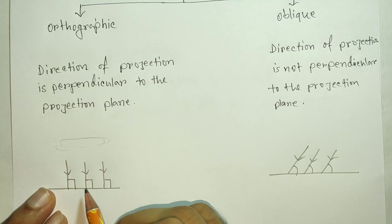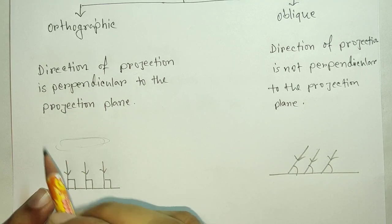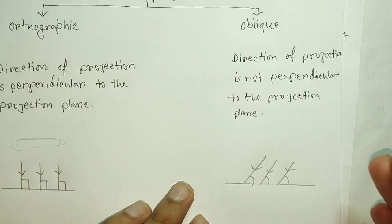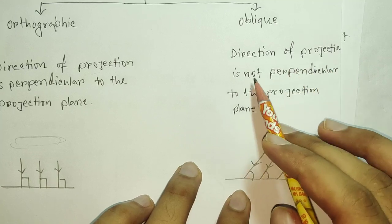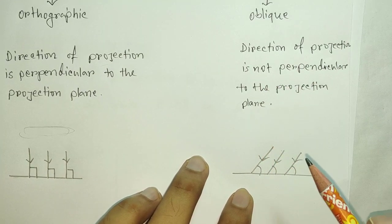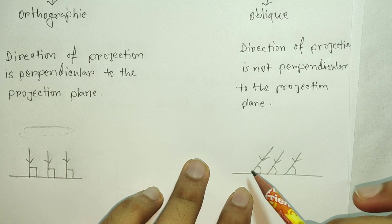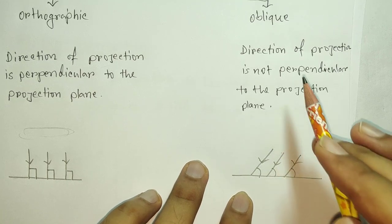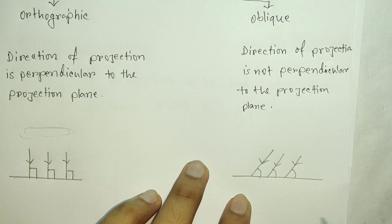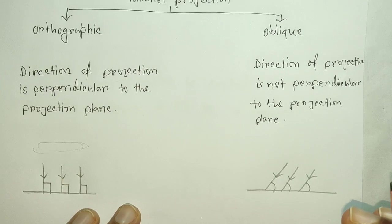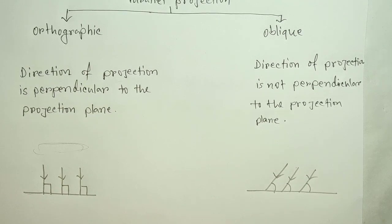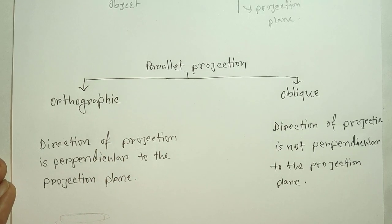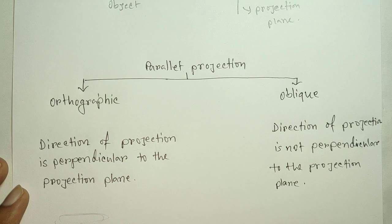Obviously, if the angle is 90 degrees, it is orthographic projection, which is very important. The orthographic projection is of three types: the top view, the side view, and the front view.